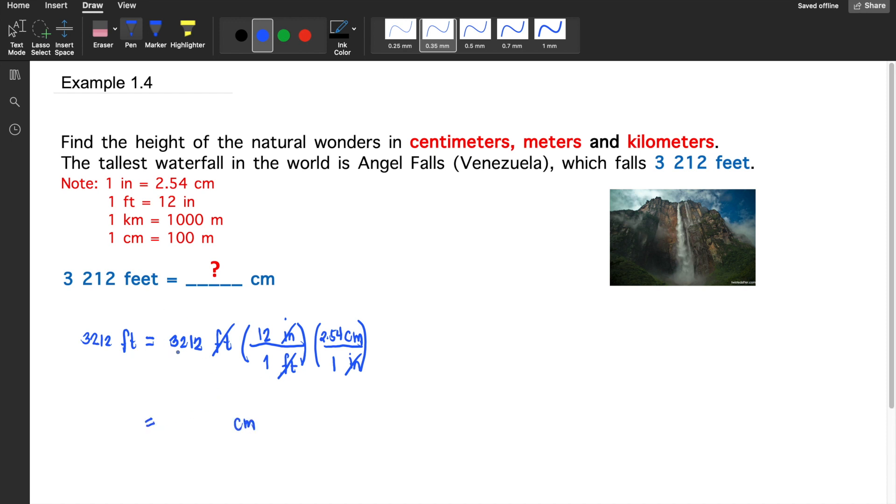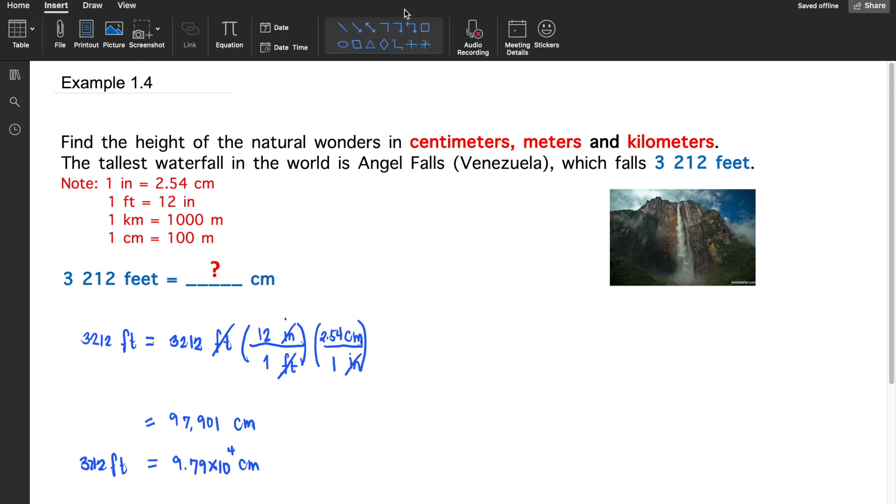Now multiply: 3,212 times 12 times 2.54. The answer would be 97,901 centimeters. Using scientific notation, that's 9.79 times 10 to the 4 centimeters. So 3,212 feet is equivalent to 97,000 centimeters, or approximately 98,000.